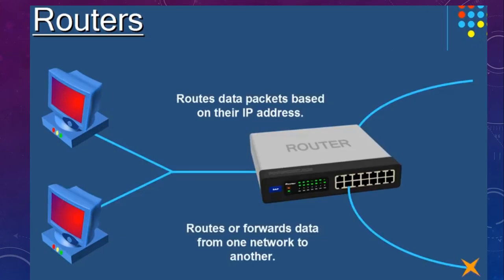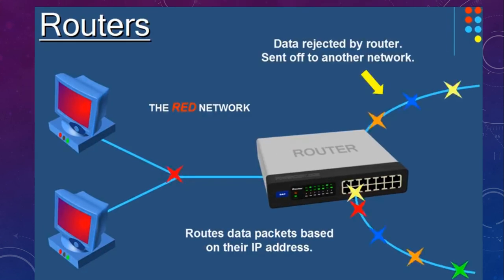Then we have routers. Routers route a data packet based on its IP address, forwarding data from one network to another. For example, looking at this picture, if we have a red network on the left-hand side, this router will forward data that belongs to that network towards the left. All other data will be either rejected or transferred to a different location by the router.